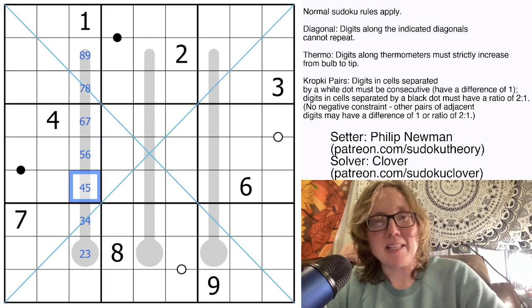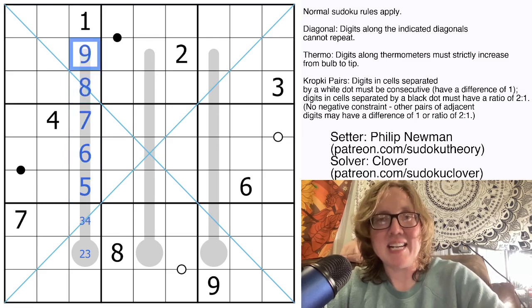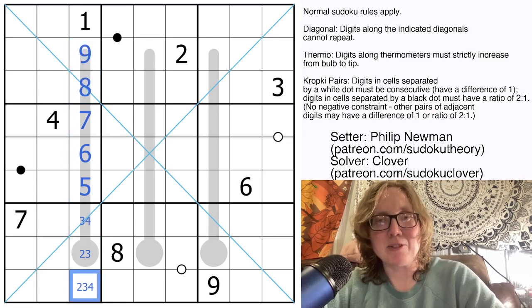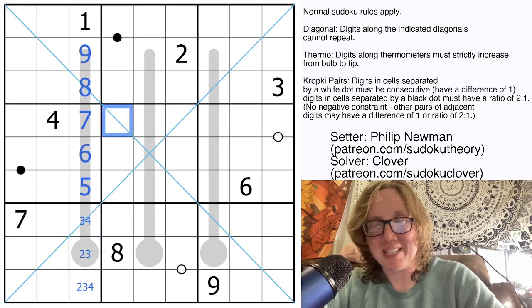So this 4 keeps this from being a 4. So we're going to have to make that a 5 in order to preserve the thermo. So we're going to have to go 5, 6, 7, 8, 9 there. And then this is either 2, 3, or 4 because those are our only remaining digits.